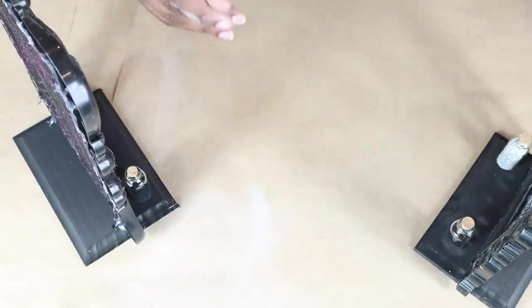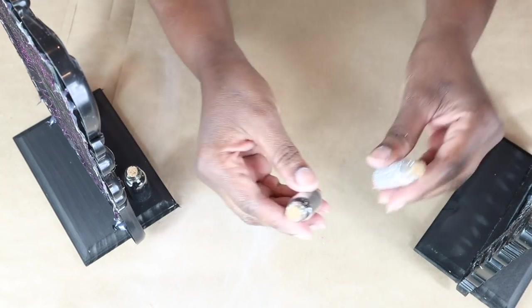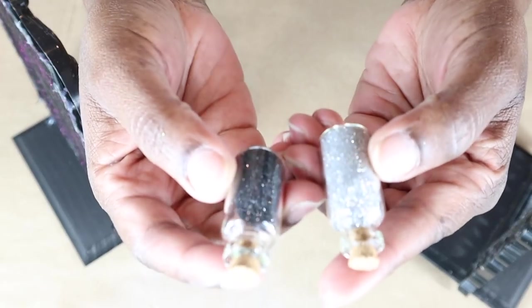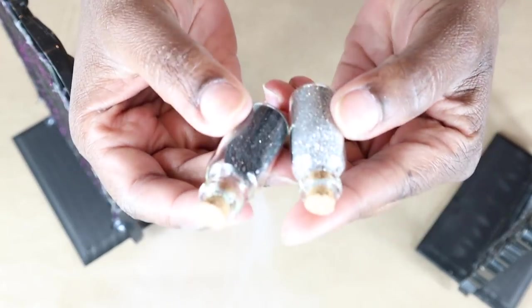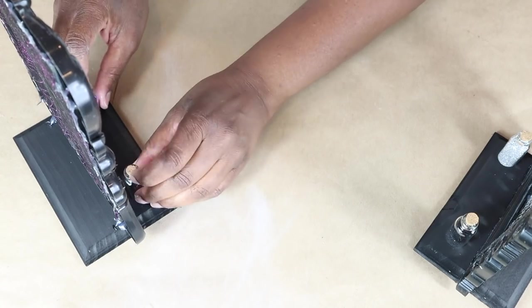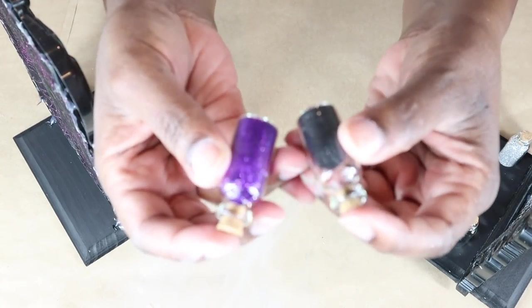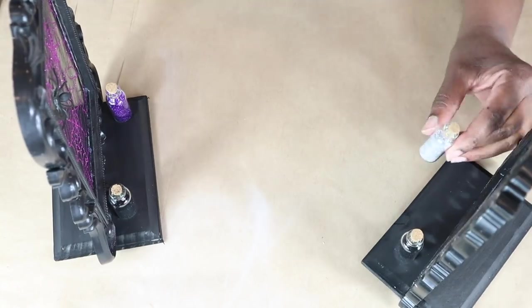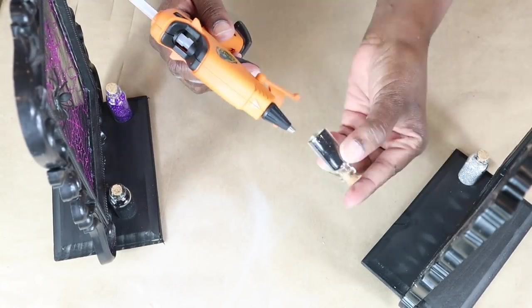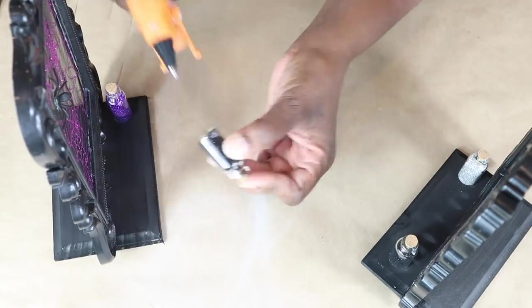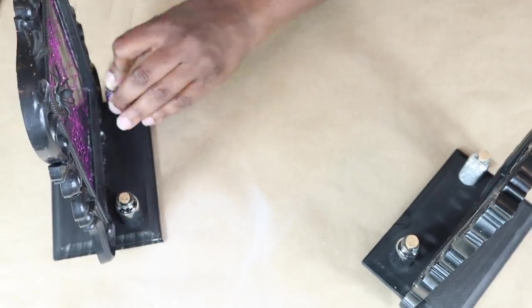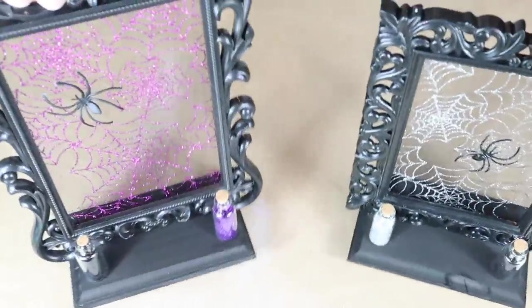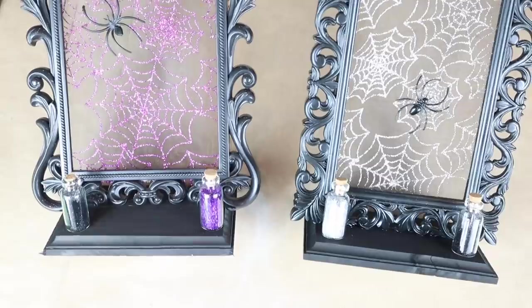Now I'm using some of these glass vials from Dollar Tree. And I filled them with silver and black glitter for the first frame. For the second frame, I filled it with black and purple glitter. And I'm just using a dot of hot glue to attach them to the base. And now these framed spider webs are done. And let's see how everything turned out together.